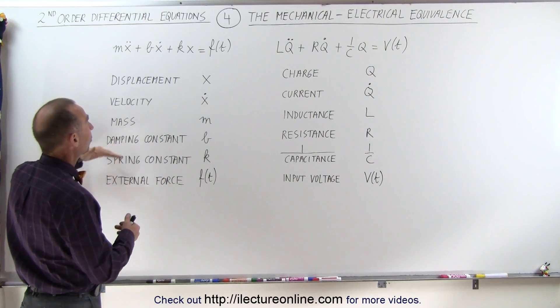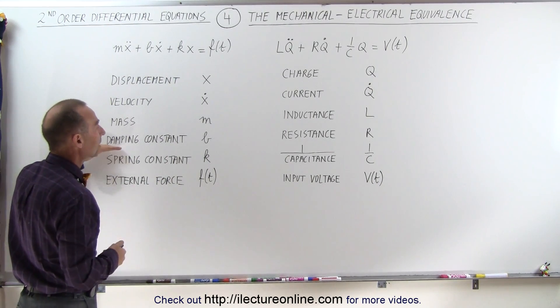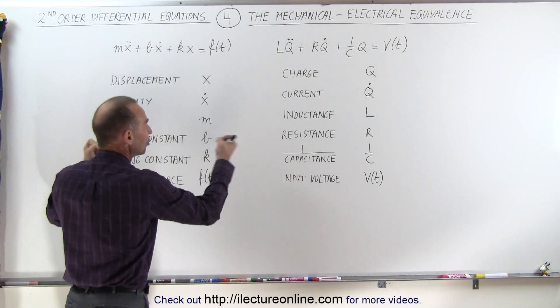We have a damping constant, for example a dashpot or some sort of liquid that has a viscous velocity, and we have resistance. Both of these take energy out of the system.